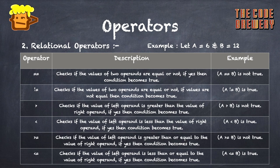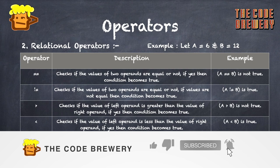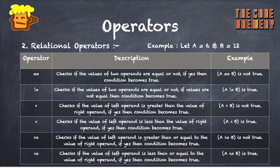Greater-than-or-equal-to checks if the left operand is greater than or equal to the right operand; if yes, the condition becomes true — A >= B is not true. Less-than-or-equal-to checks if the left operand is less than or equal to the right operand; if yes, the condition becomes true — A <= B is true.